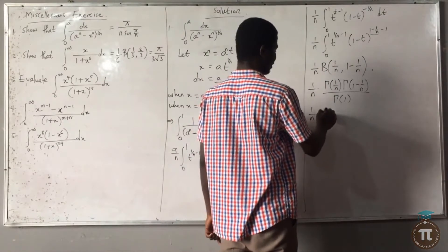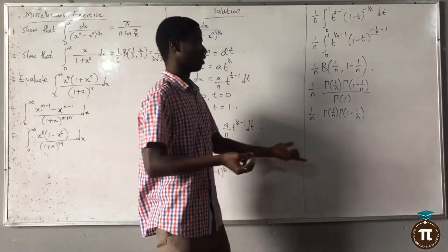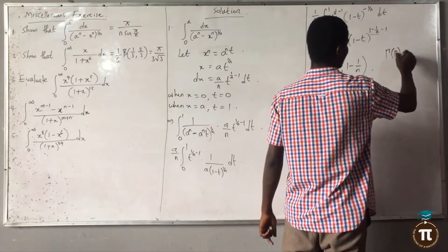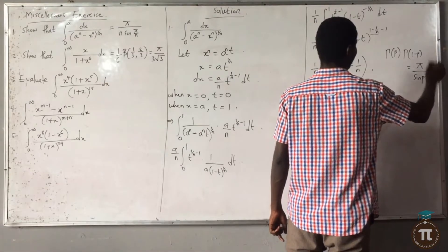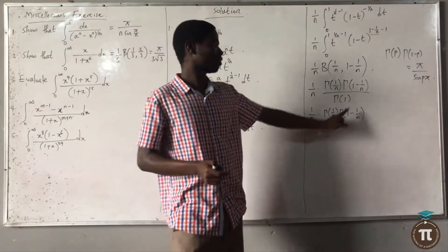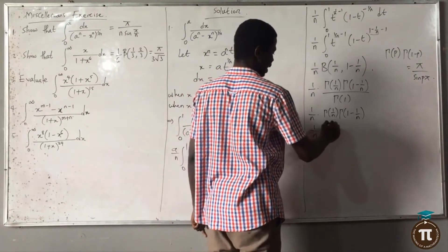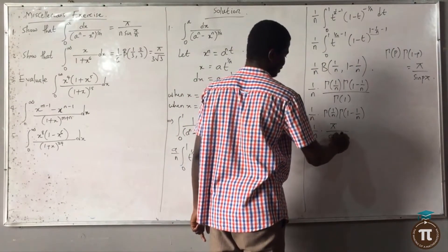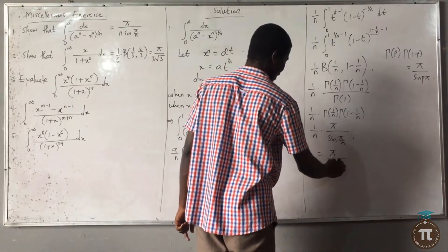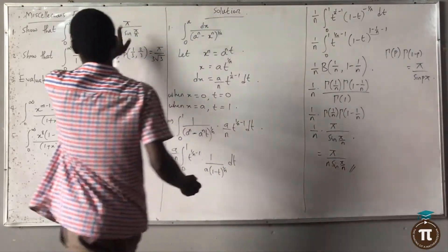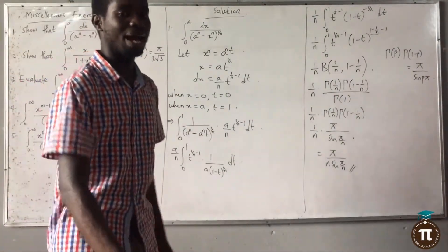So this is 1/n times gamma(1/n) times gamma(1 minus 1/n). From the previous lecture, gamma(1 minus 1/n) equals π over sin(π·(1/n)). So this is 1/n multiplied by π/sin(π/n), which gives π over n·sin(π/n). And that is the answer — we have proved what was asked.